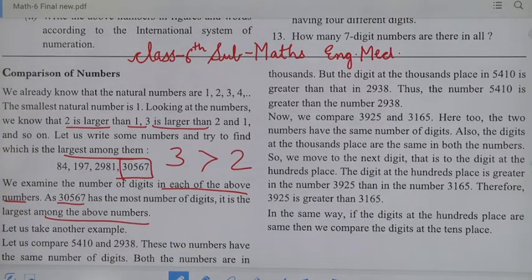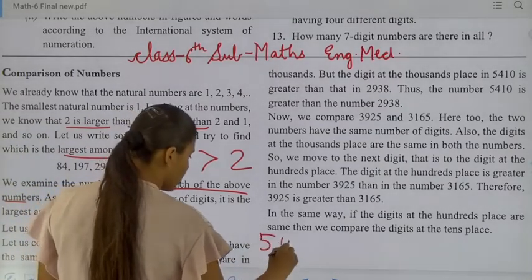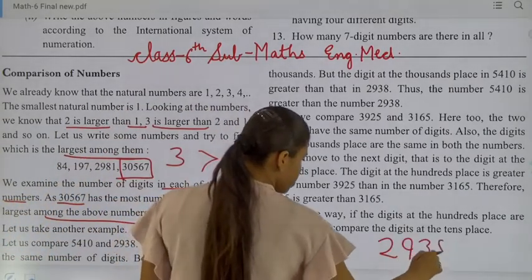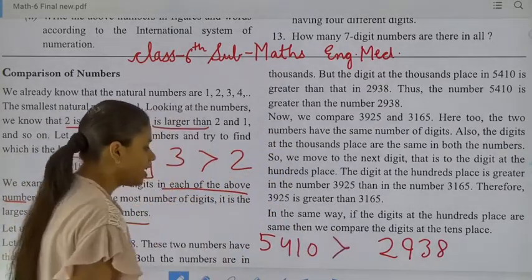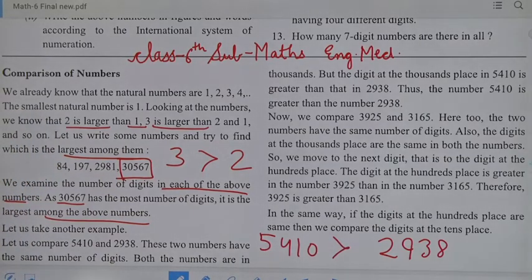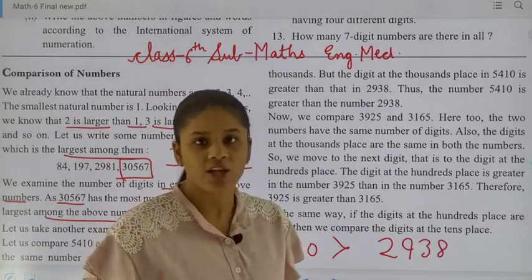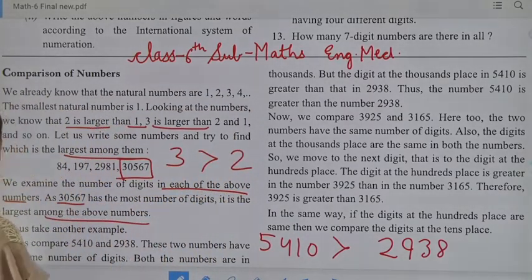Let us take another example. Let us compare 5,410 and 2,938. Students, one more example: 5,410 and 2,938. You have to tell which is the greatest number — that is 5,410. These two numbers have the same number of digits. Both numbers are in thousands, but which one is the greatest number? That is 5,410.